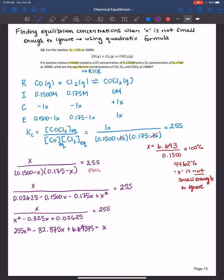Now remember to do the quadratic, you need it equal to 0. So I'm going to subtract minus 1x on this side. Put it, bring it over there. So then I get 255x squared minus 83.875x plus 6.69375 is equal to 0.